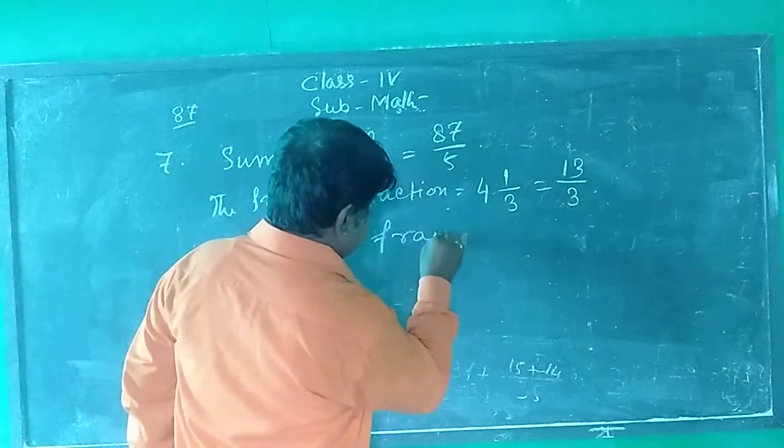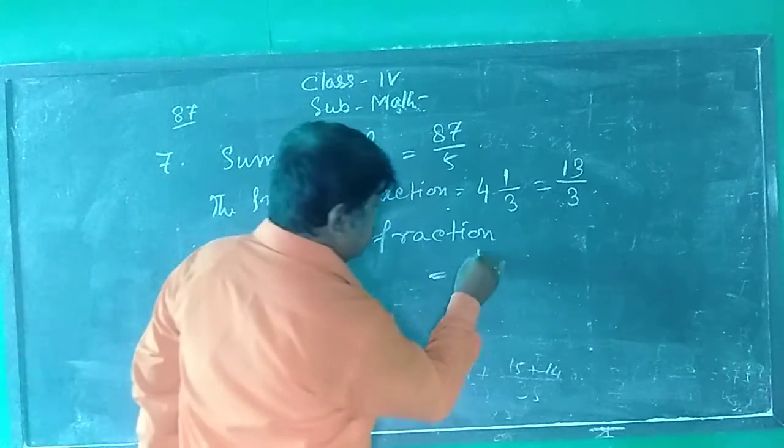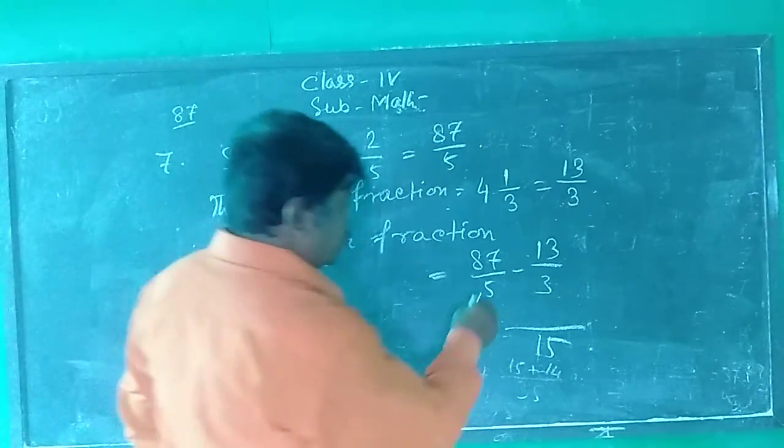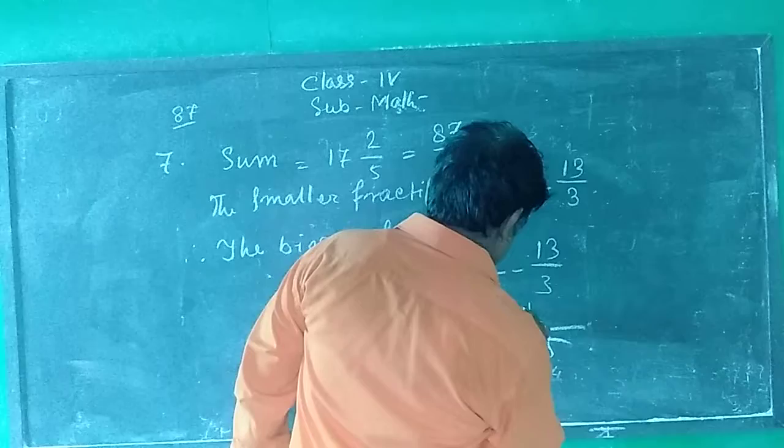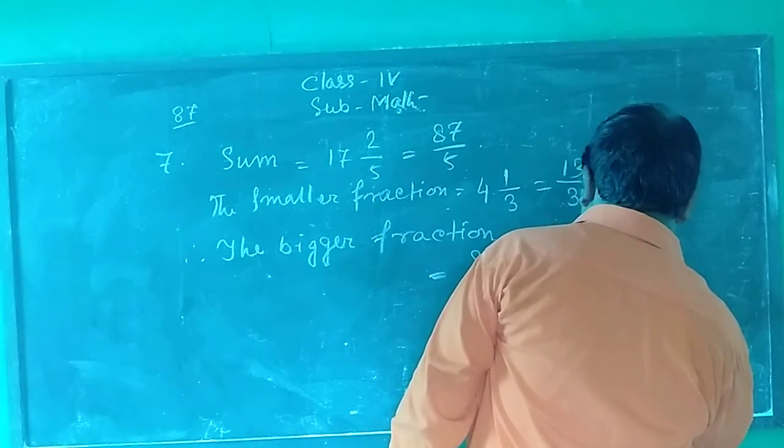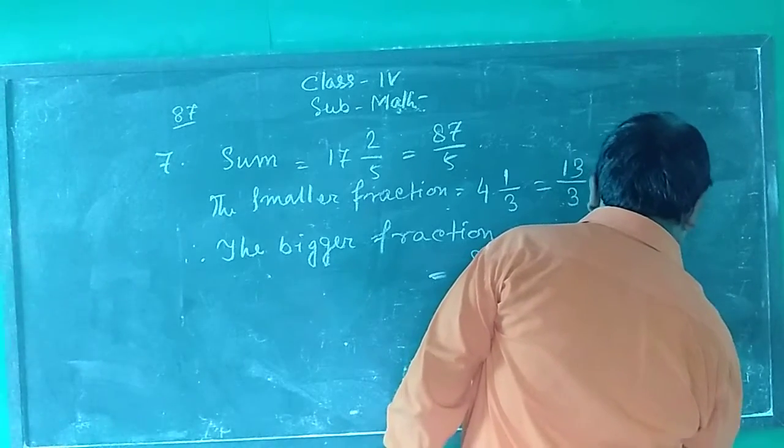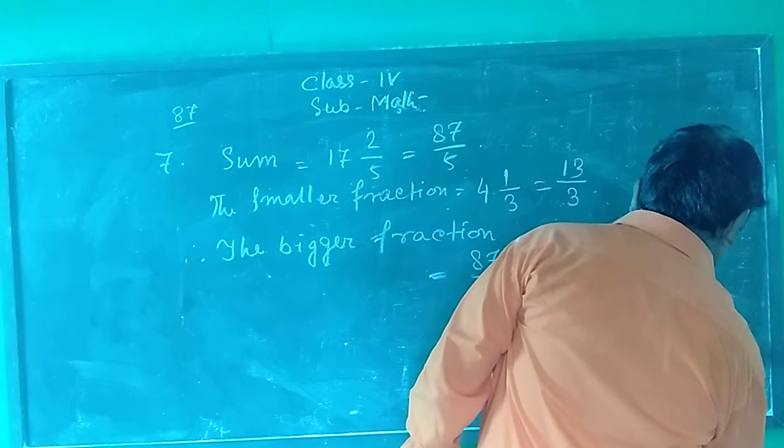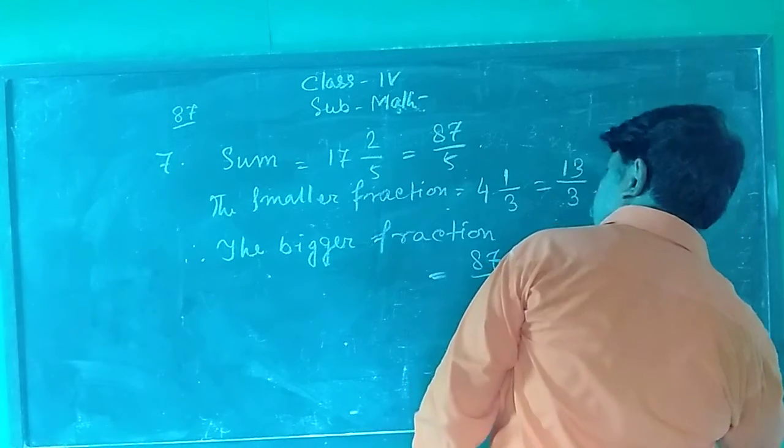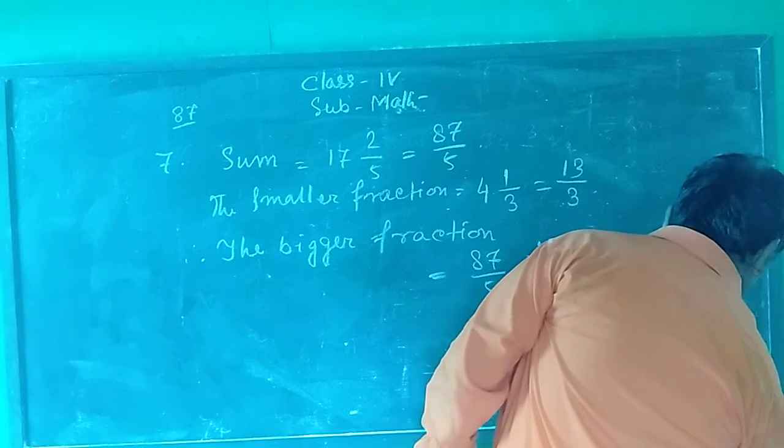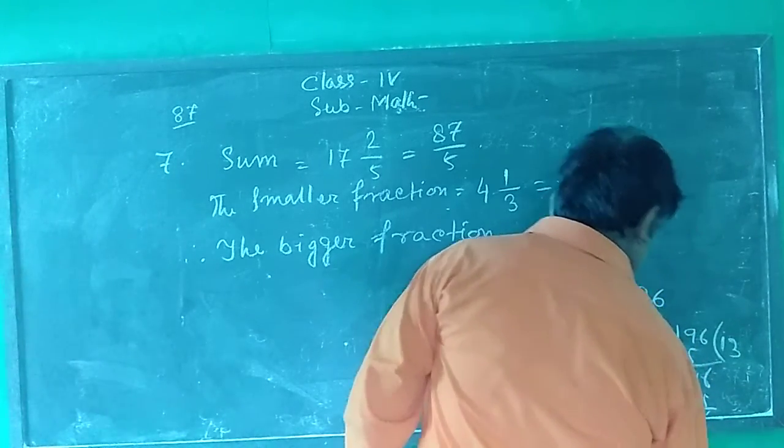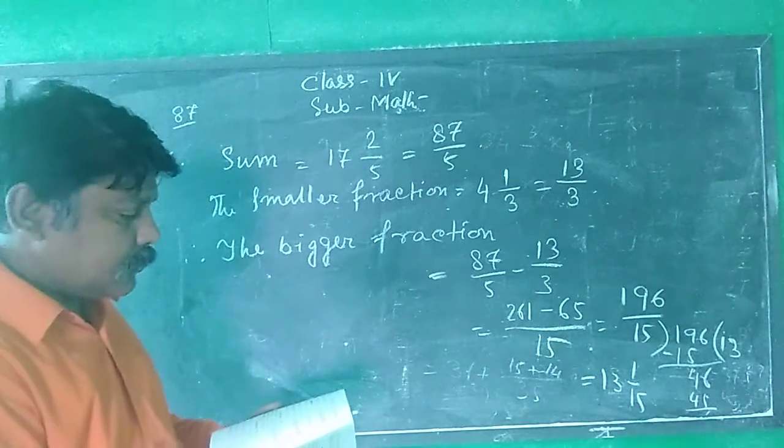The bigger fraction equals to 87 by 5 minus 13 by 3 equals to, LCM is 15, 261 minus 65 equals 196 by 15. Divide: 13 times 15 is 195, 196 minus 195 equals 1, equals to 13 whole 1 by 15. The bigger fraction is 13 whole 1 by 15.